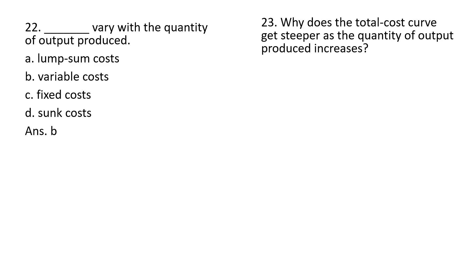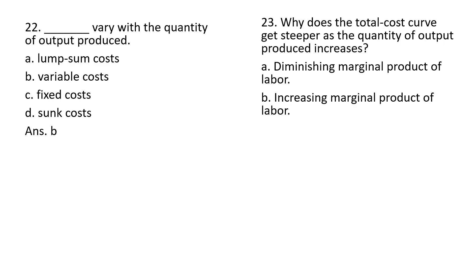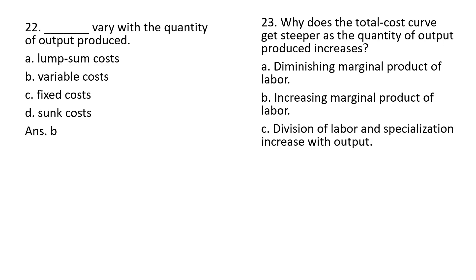Question 23: why does the total cost curve get steeper as the quantity of output produced increases? Diminishing marginal product of labor is the correct answer. Answer choice A.